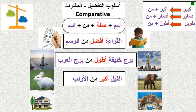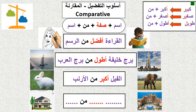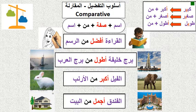Now, can you make a sentence about الفندق (hotel) and البيت (house)? نعم، أحسن! الفندق أجمل من البيت — the hotel is more beautiful than the house. شكرا، السلام عليكم!